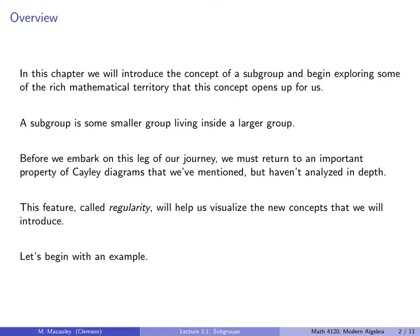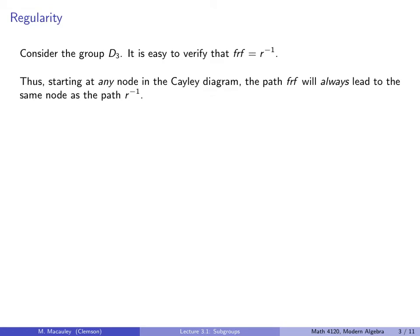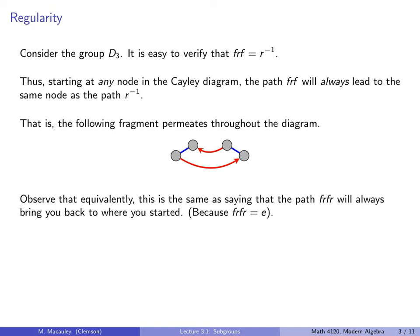Let's begin with an example. Consider the group D3. It is easy to verify that FRF equals R inverse from the Cayley diagram. Thus, starting at any node in the Cayley diagram, the path FRF will always lead to the same node as the path R inverse. In other words, the following fragment permeates throughout the diagram. Observe that equivalently, this is the same as saying that the path FRFR will always bring you back to where you started. If I take this equation and multiply on the right by R, then these cancel and I get FRFR equals the identity.